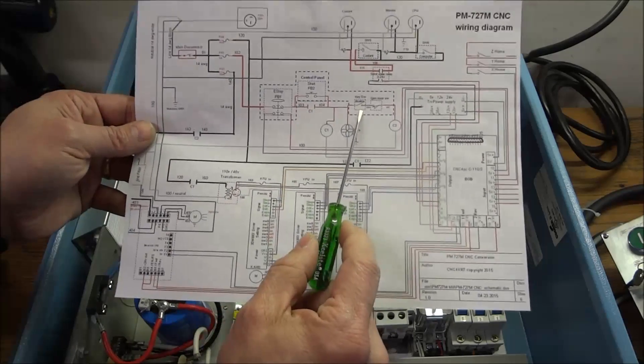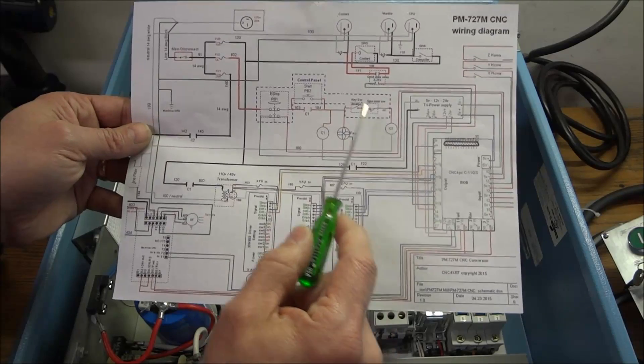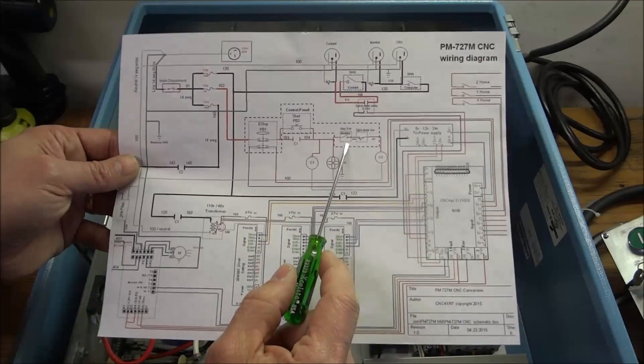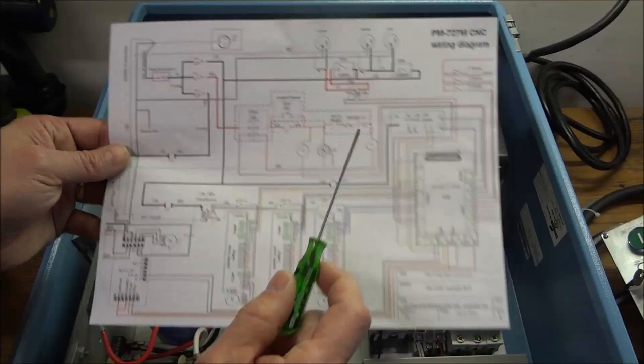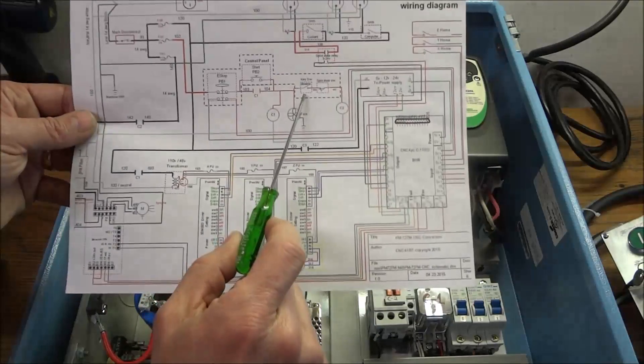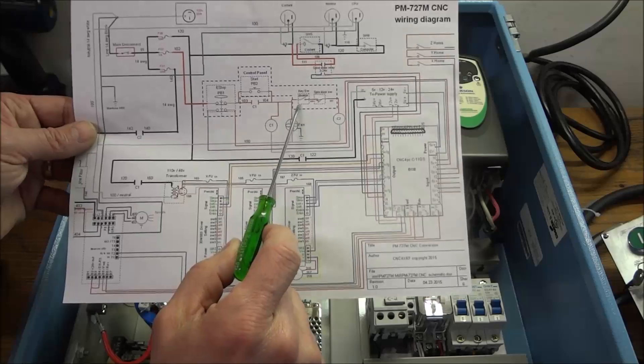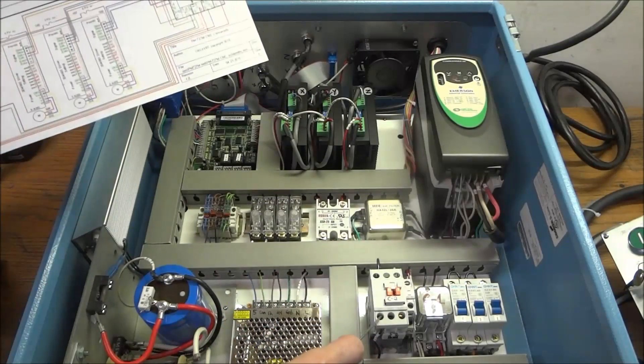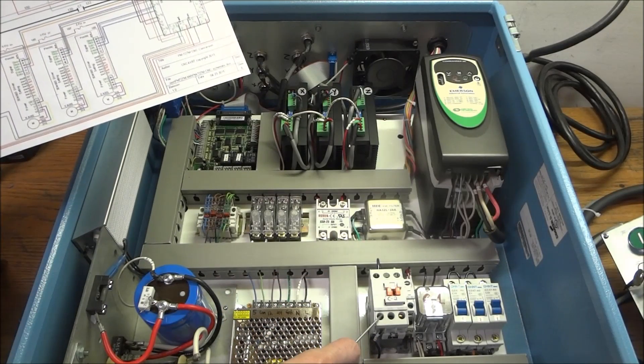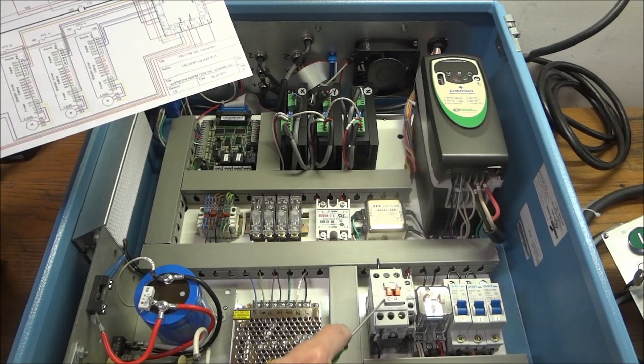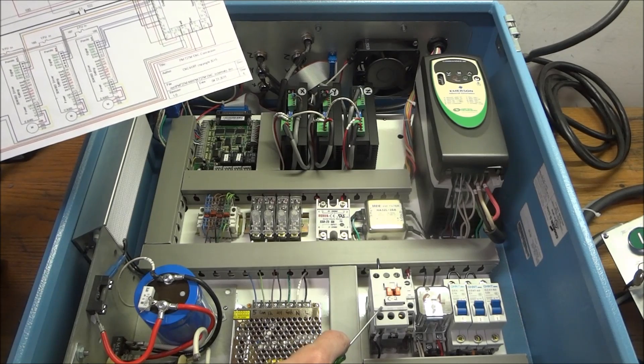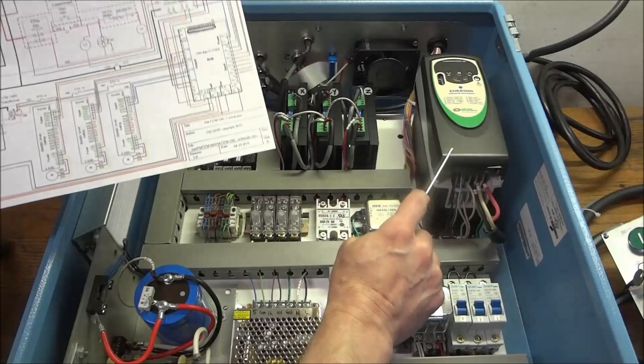Now likewise, the key switch for the C2 contactor, the reason I put this key switch in here is to disable the VFD. If you turn this key switch and open up these contacts, then C2 contactor will de-energize and the contacts will pull open and this will shut down the VFD.